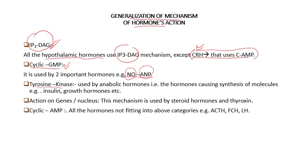Tyrosine kinase pathway is mainly used by anabolic hormones — including growth hormone, insulin, IGF, and erythropoietin — so they will all be utilizing the tyrosine kinase pathway.